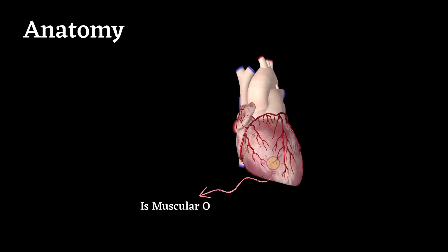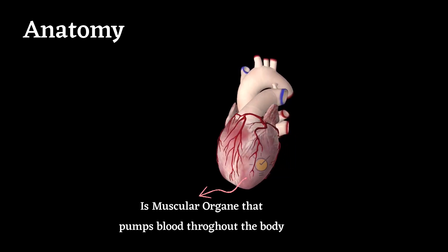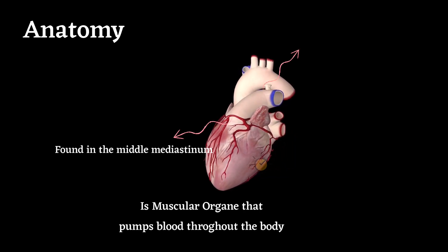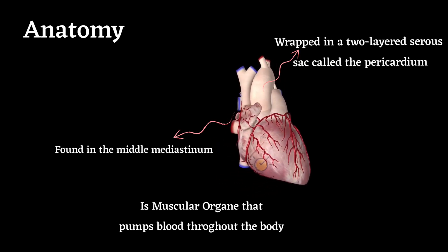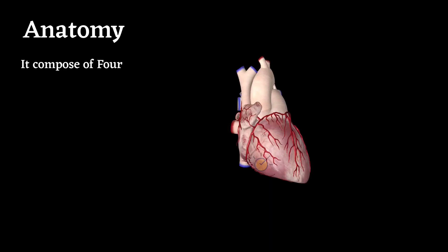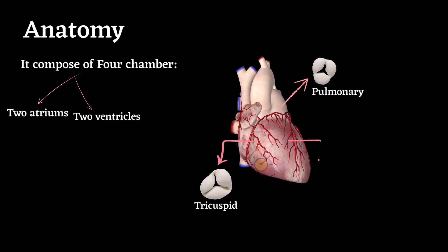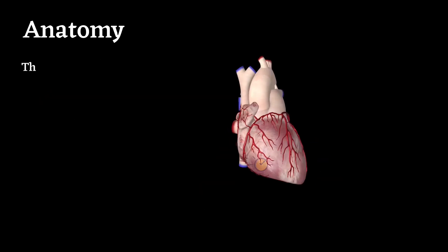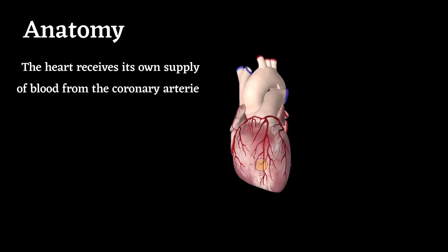The heart is a muscular organ that pumps blood throughout the body. It is found in the middle mediastinum, wrapped in a two-layered sac called the pericardium. It is composed of four chambers — two atriums and two ventricles — and has four valves: tricuspid, pulmonary, mitral, and aortic. The heart receives its own blood supply from the coronary arteries.